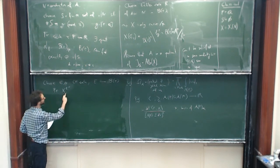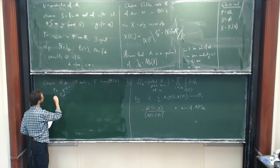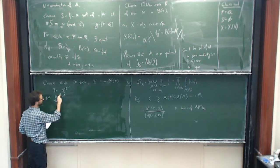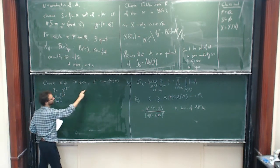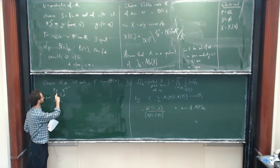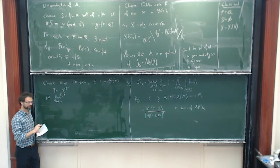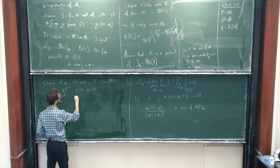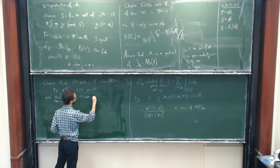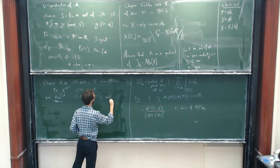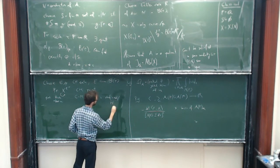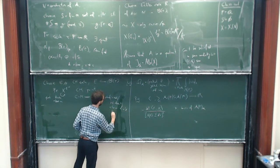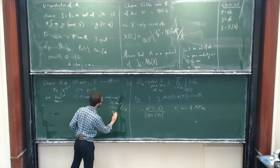The curve X has an action by the Hecke algebra — the quaternionic Hecke algebra — and in particular it has an action by E via this embedding, and the points fixed by this action are called CM points. The theory of complex multiplication tells us that P is defined, if chosen suitably, over the Hilbert class field H(E).